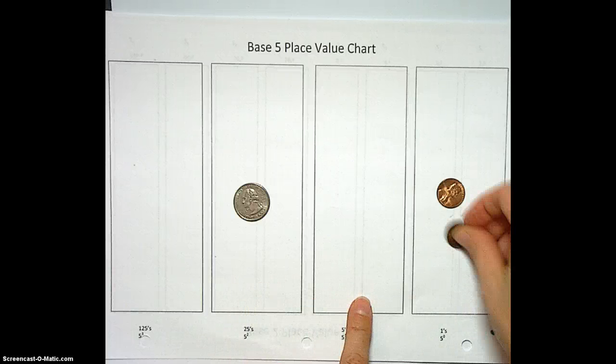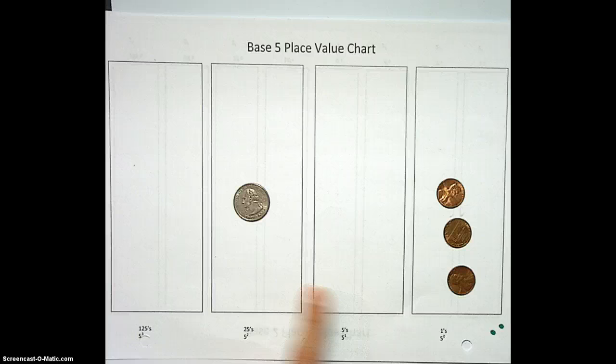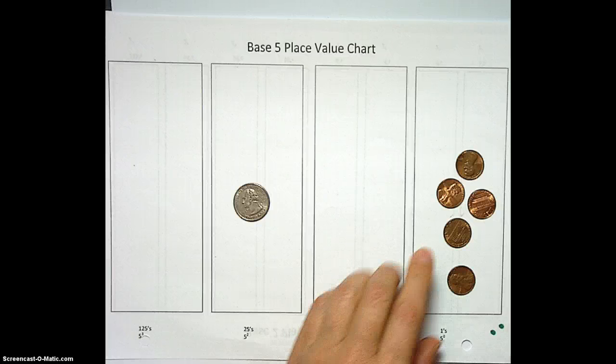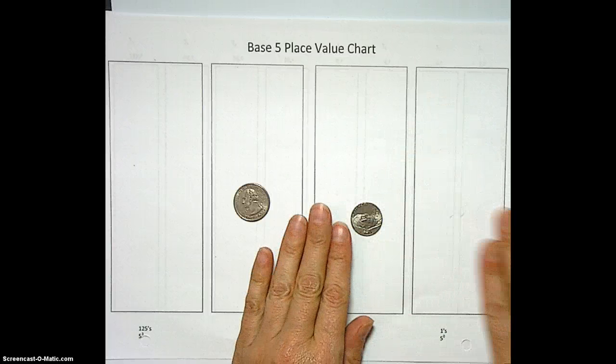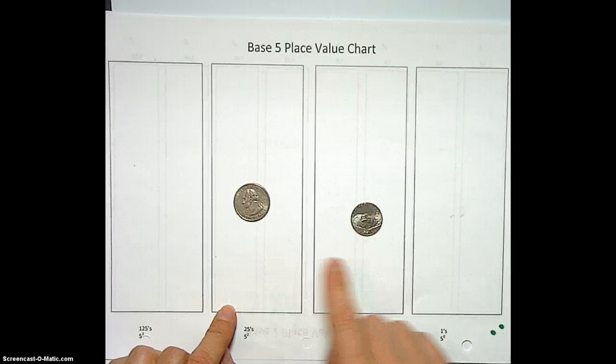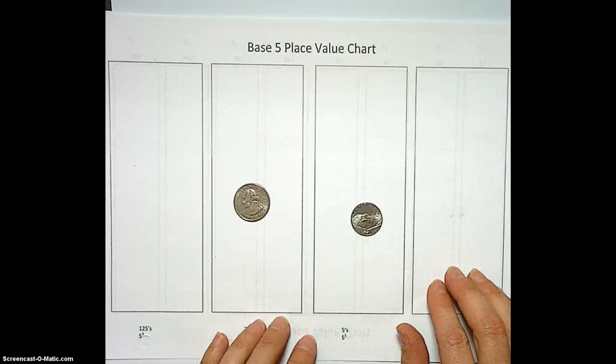1, 0, 2, 1, 0, 3, 1, 0, 4, 1, 0, 5. Oh, no! We can't do 1, 0, 5 in base 5. We would have to do that, right? Yes. And that would be 1, 1, 0. So again, the place value feeling really weird.